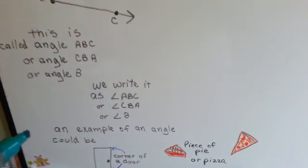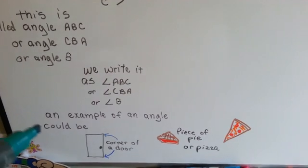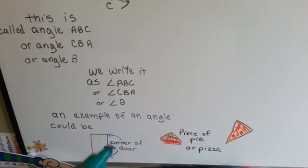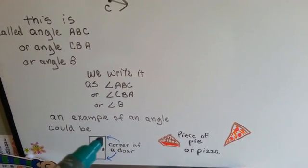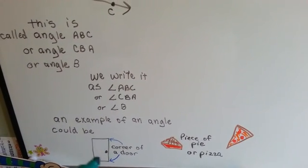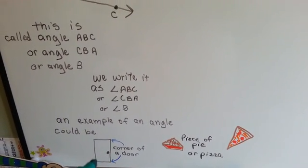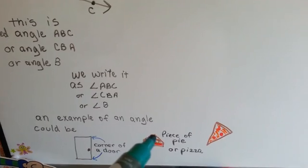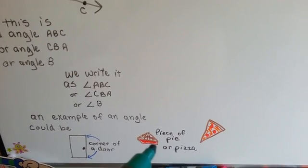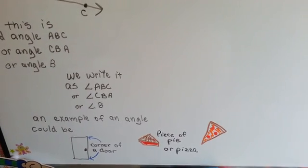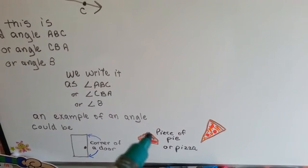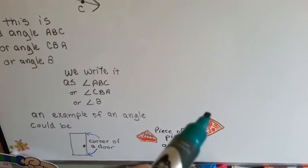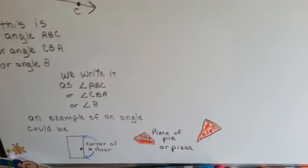An example of an angle could be the corners of a door — each corner is an angle. The piece of a pie or pizza, those are angles too. There's an angle right there.